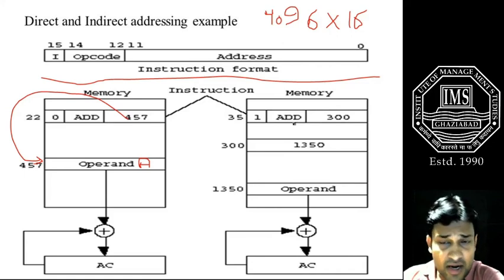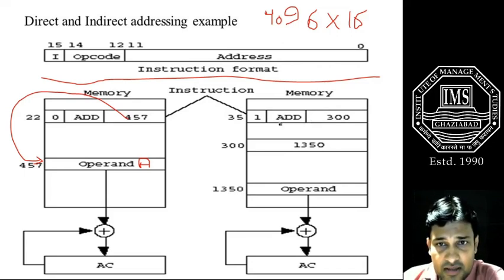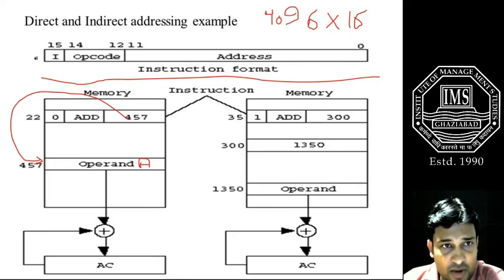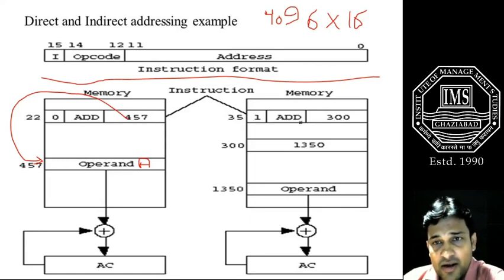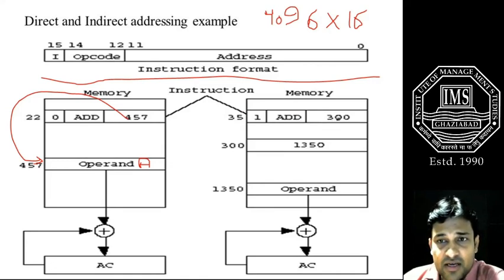Here is the very important concept: the value 1 in the instruction format indicates indirect addressing, as I explained earlier. The addition operation is going to be performed on the operand, but the address field contains 300. So 300 is the memory address for another slot.